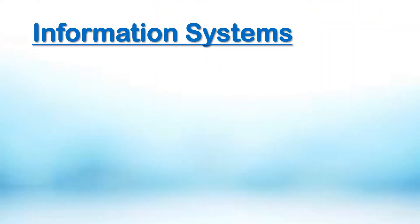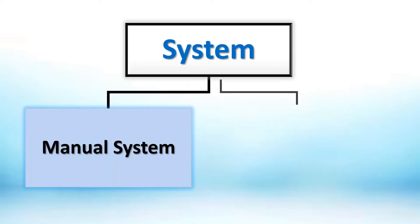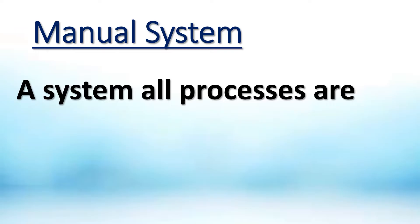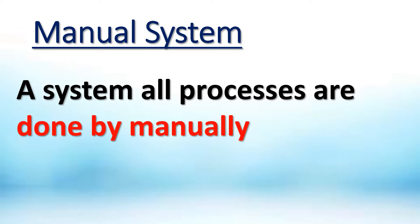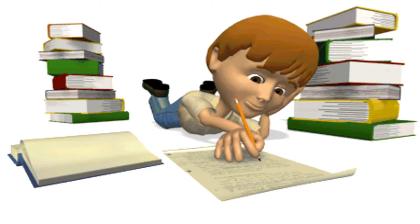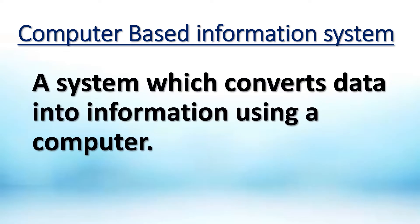An information system is a system which converts data into information. Information systems can be classified as manual systems and computer-based information systems. A manual system is one where all processes are done manually, while a computer-based information system converts data into information using a computer.